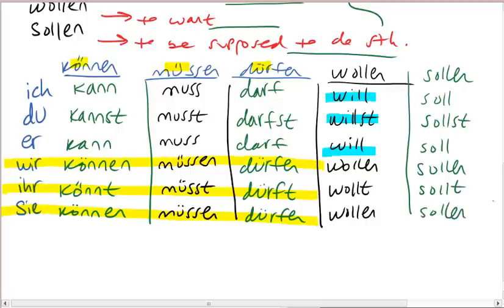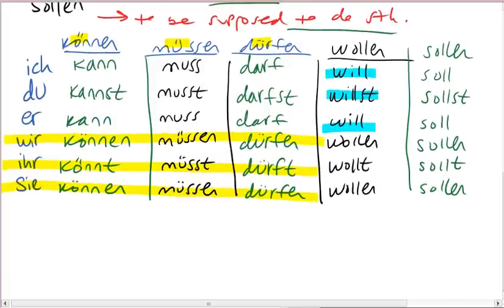So do what you can to memorize this table and to recognize that if the verb, the modal verb in the infinitive contains an umlaut, like können, müssen, dürfen, then that umlaut will remain out of the way in the ich, du, er, sie, es forms, but will come back in the wir, ihr, sie forms.